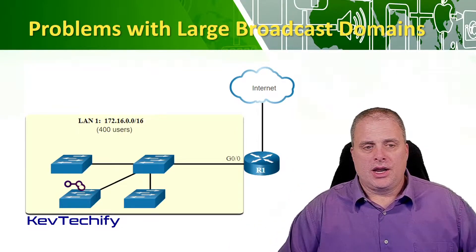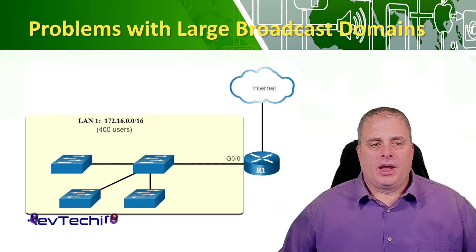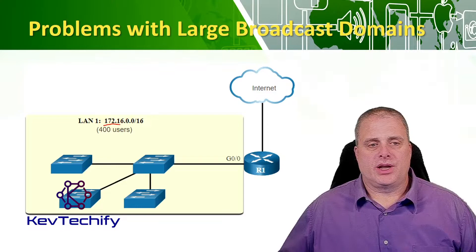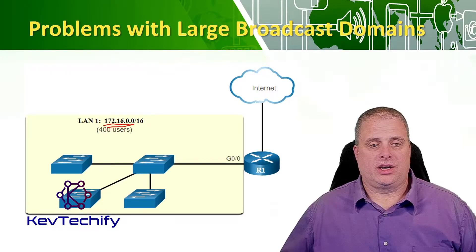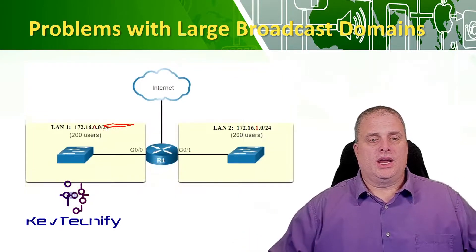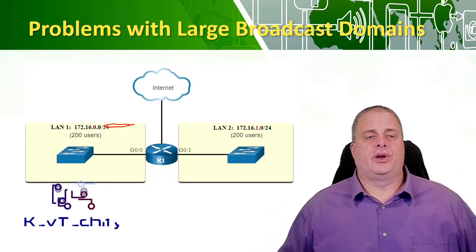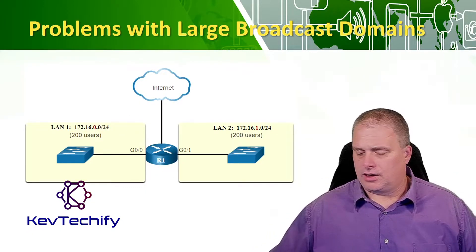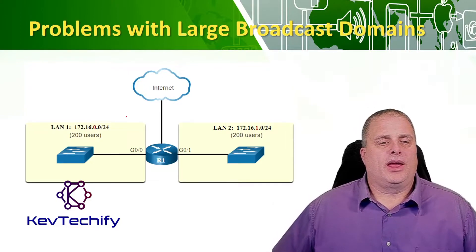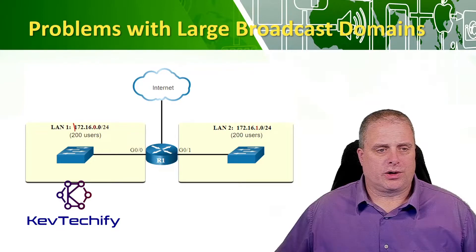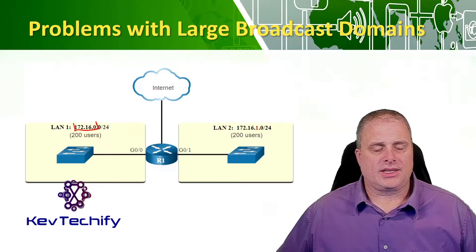What we do is divide our network up. As you can see, starting with IP address 172.16.0.0 as our base network, we're going to segment this off and create two networks. Here we have LAN 1 and LAN 2. The network portion is a slash 24, so the first 24 bits — the first three octets — make up the network portion, which is 172.16.0.